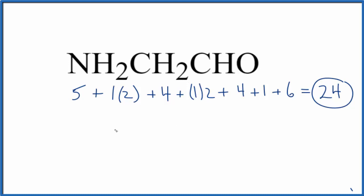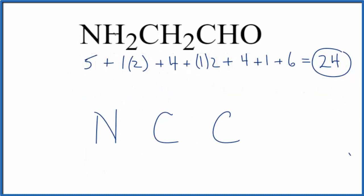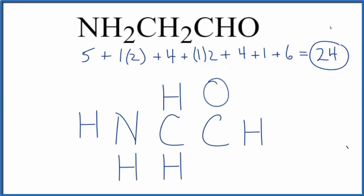Since I'm given it in this order, I'm going to assume that the nitrogen and the carbon and then this carbon are bonded together, so I'm just going to put those in order and then we'll put hydrogens on the outside - two for the nitrogen, two for this carbon, and then we have this H and this O.